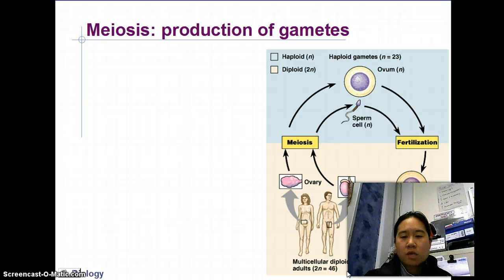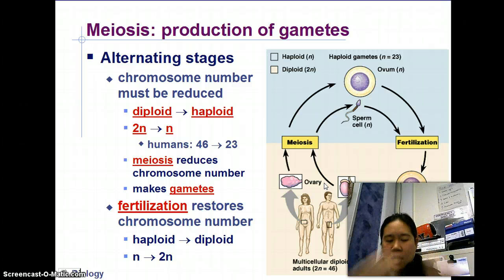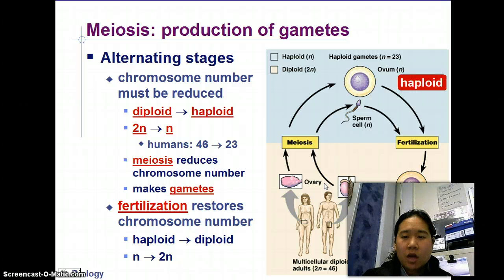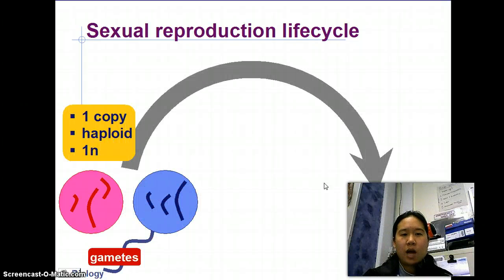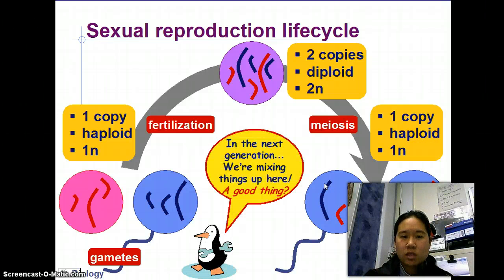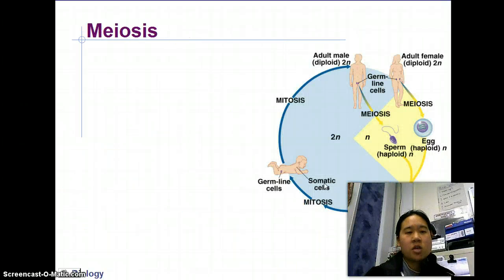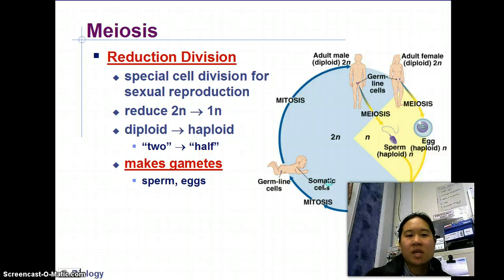So how do we make gametes? Gametes are sex cells — sperm and eggs. We alternate stages, called alternation of generations. You alternate between being two copies and one. You're diploid most of your life, then you make gametes, the gametes meet, and you have a zygote. We alternate between haploid and diploid — diploid means two, haploid means one. Gametes combine in fertilization and the cycle continues. You mix things up; you are different than your parents. Nobody will ever be like you.